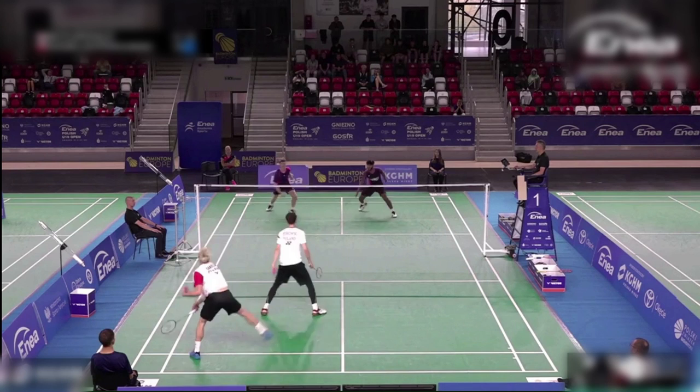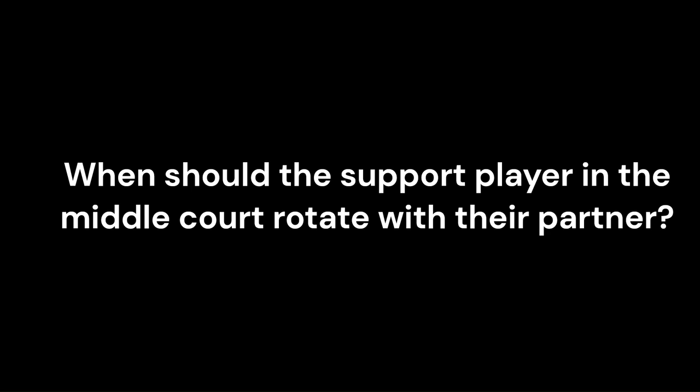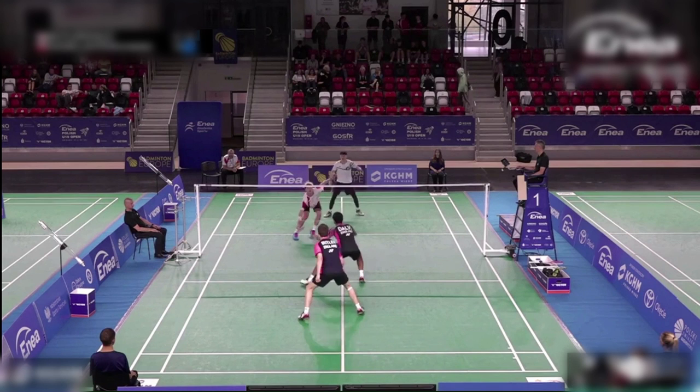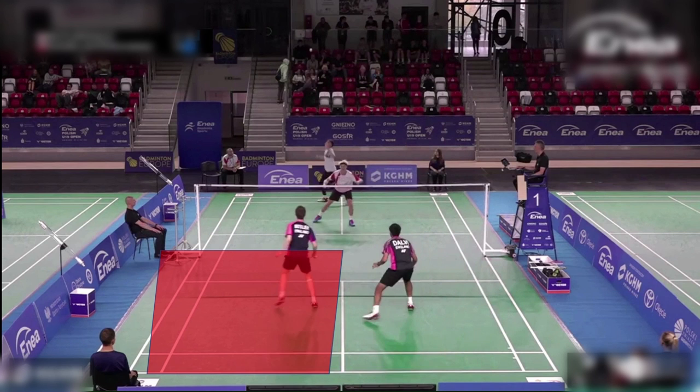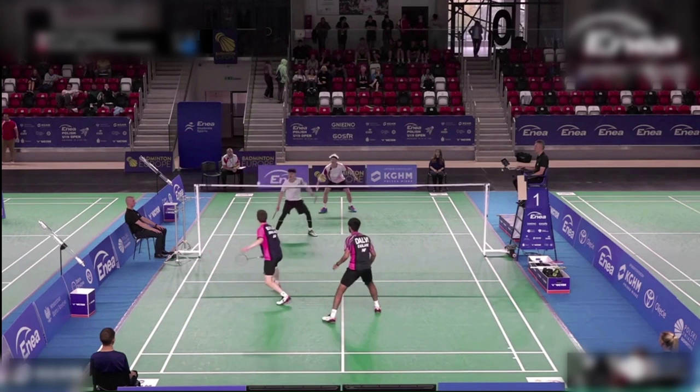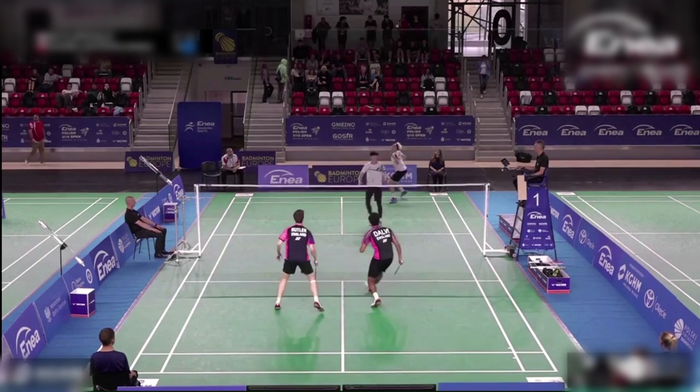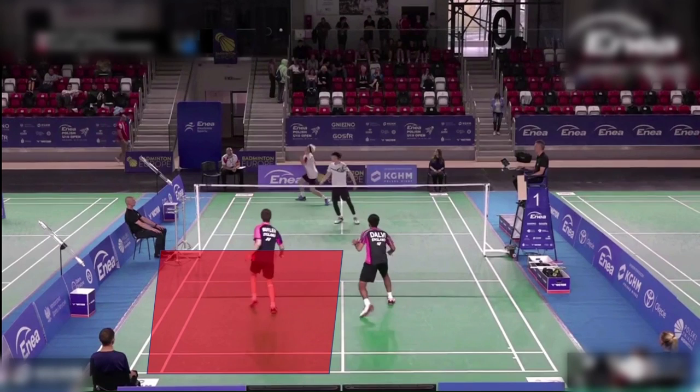When should the support player in the middlecourt rotate with their partner? Generally, the front and back court should rotate when the partner has a gap in their coverage, but only after ensuring that their own side of the court is protected against incoming shuttles. The support player in the middlecourt should prioritize protecting their own side of the court before assisting their partner's side. In other words, the attention of your own side should always come first, while your partner's side comes second. It is important to understand your main responsibilities in your position and not neglect them while trying to help your partner, because the front and back court have a division of labor.